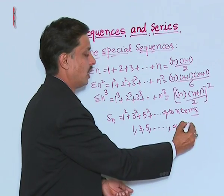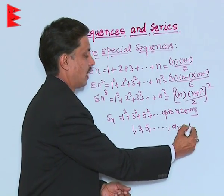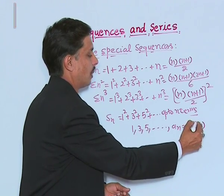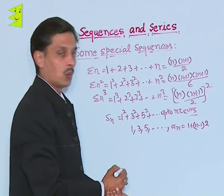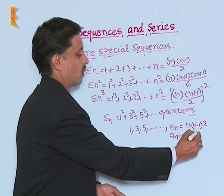Its nth term will be, because it is AP, so it is a plus n minus 1 into d, which is a plus n minus 1 into 2. That is, this becomes aₙ equals to 2n minus 1.